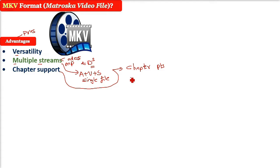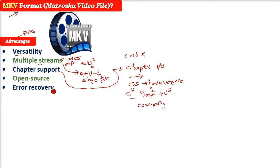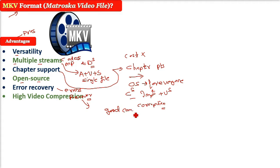MKV is open source, meaning its development is driven by the community, ensuring continuous improvements and updates. You also don't have to worry about licensing costs with MKV because it's open source. MKV also offers error recovery — this format is more resistant to corruption and, in case of file errors, it is usually easier to recover the playable content. It has high video compression rates, enabling us to store large files without losing quality. MKV container files are also designed to be future-proof, meaning the files would not become outdated.